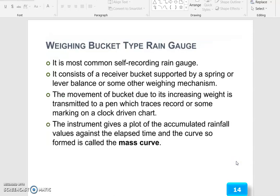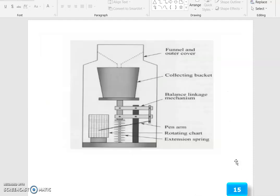The weighing bucket type rain gauge is the most common self-recording rain gauge. It consists of a receiver bucket supported by a spring or lever balance or some other weighing mechanism. The movement of the bucket due to its increasing weight is transmitted to a pen which traces a record on a clock-driven chart. The instrument gives a plot of the accumulated rainfall values against the elapsed time, and the curve formed is called a mass curve.